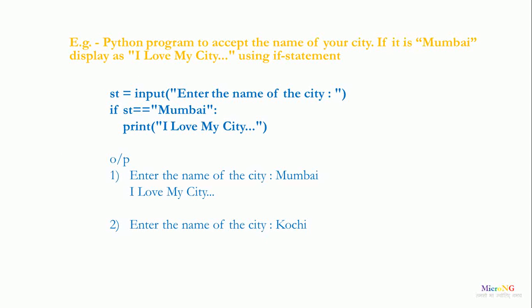Example: a Python program to accept the name of a city and, if it is Mumbai, display 'I love my city' using an if statement. The input method reads the city name from the user and stores it in variable st. If st equals Mumbai, a print statement prints 'I love my city'. During execution, if the user enters Mumbai, the statement will be printed; if any other city name is entered, the statement will not be printed.